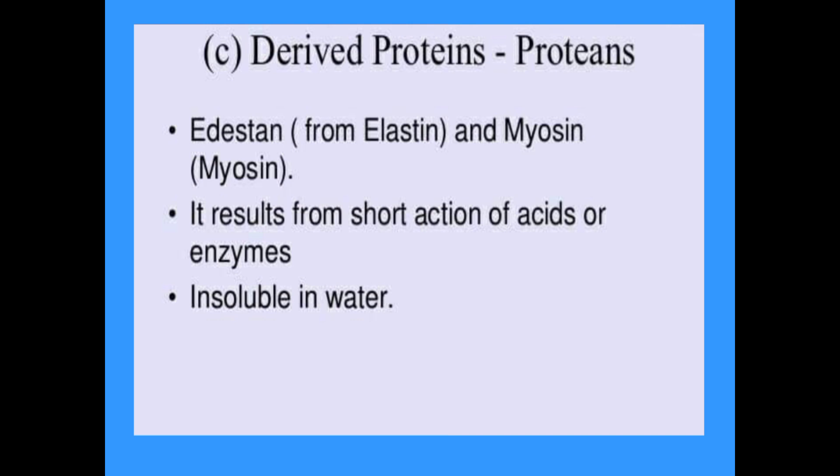Derived proteins include examples such as elastin and myosin. They result from partial hydrolysis by short actions of acids or enzymes. Elastin is present in elastic tissues, while myosin is present in muscle tissue.